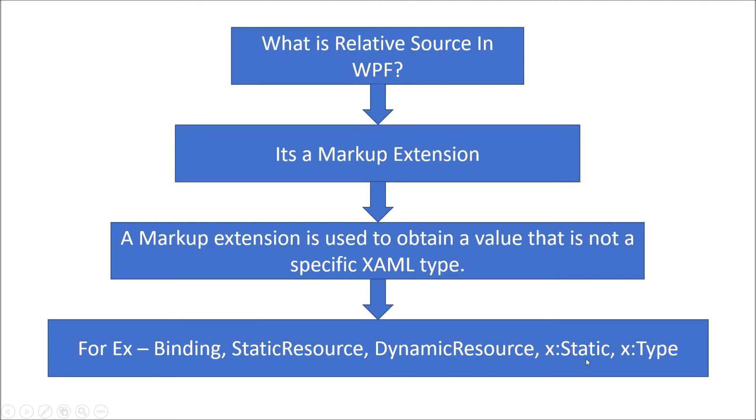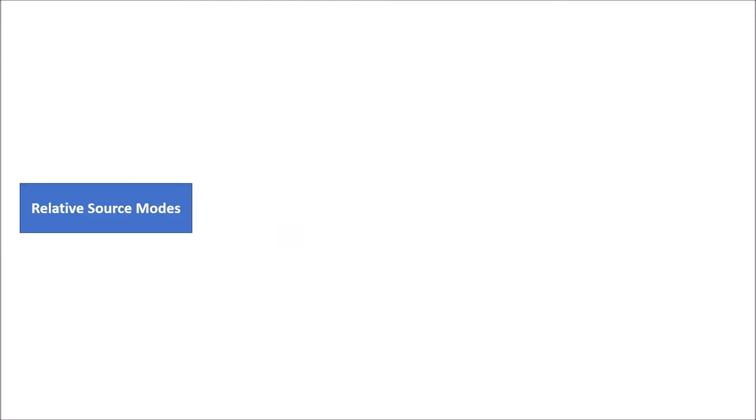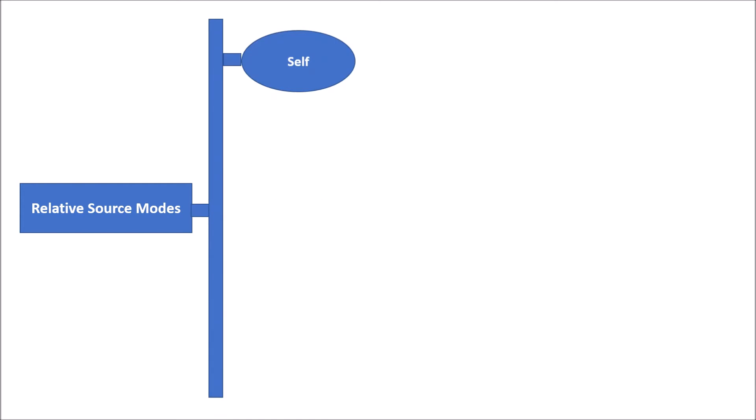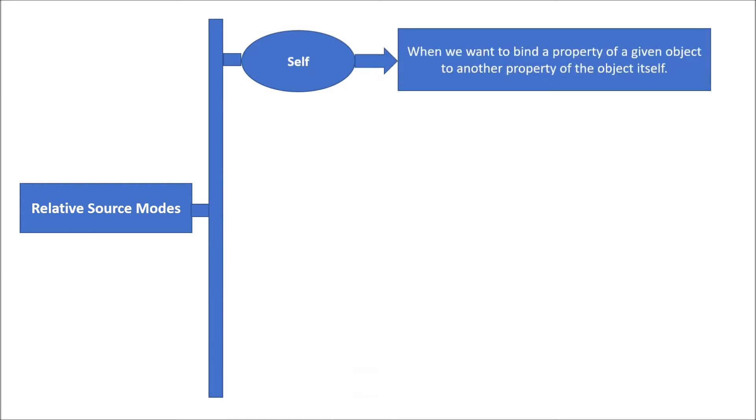Examples of markup extensions are Binding, StaticResource, DynamicResource, x:Static, and RelativeSource. Now the most important question is: in what scenario will I use RelativeSource? To understand this, we need to understand the various modes available in RelativeSource. There are four modes, and the first is Self mode.